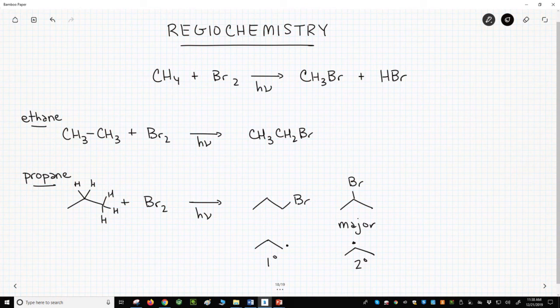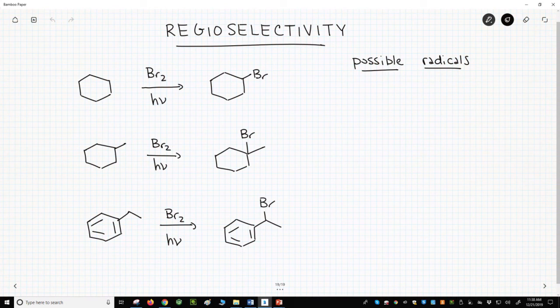We have three brominations with products on the screen. In the top reaction we have cyclohexane. There really isn't any regiochemistry here.